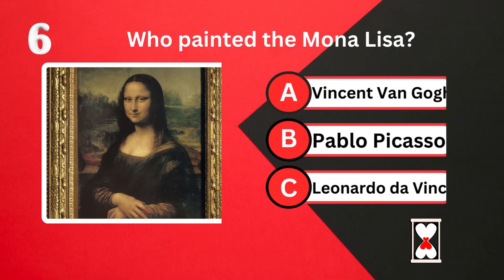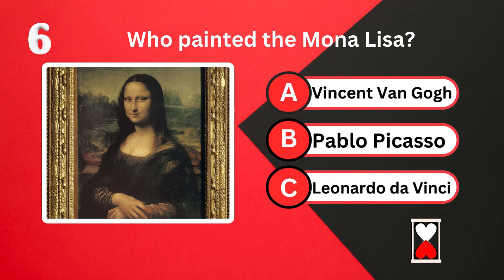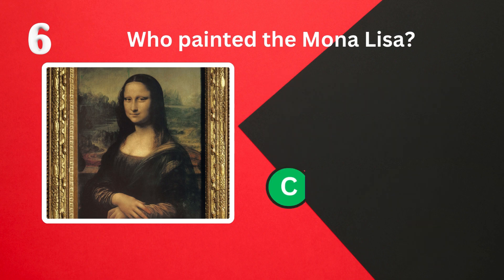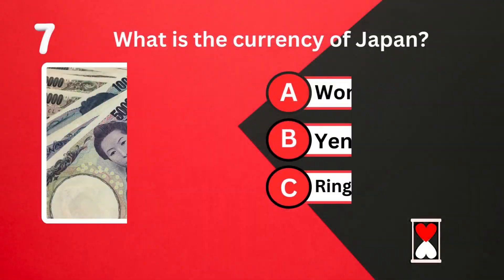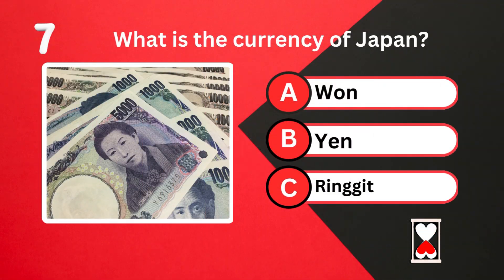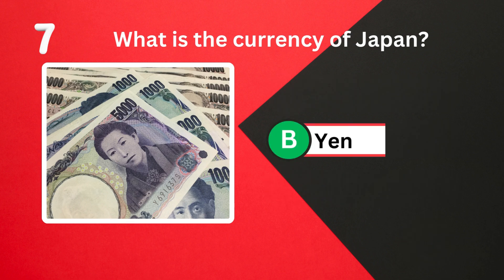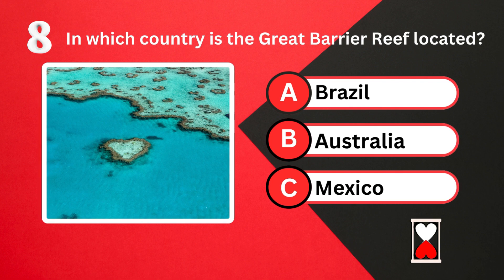Who painted the Mona Lisa? Leonardo da Vinci. What is the currency of Japan? In which country is the Great Barrier Reef located?